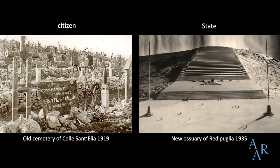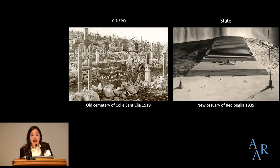Within the new ossuaries, the remains of the dead were reorganized following a fascist conception of citizenship. Whereas the older cemeteries buried the dead individually in individual graves, the new ossuaries provided mass burial. An older burial ground, the cemetery of Colle Sant'Elia established in 1919, shows the dead placed within individual graves, each with their own marker or memorial. By the early 1930s, Mussolini came to see this cemetery as unsuited to the political needs of the regime, and had it destroyed.